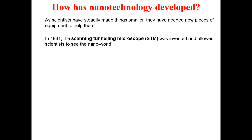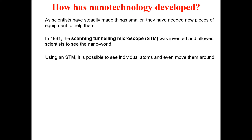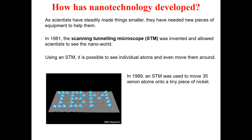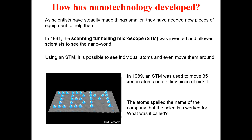With the scanning tunneling microscope, scientists were able to interact with the nano world. Using an STM it was possible to see individual atoms and also to manipulate them — to move them around. One of the most remarkable things done with the STM occurred in 1989, when an STM was used to move 35 xenon atoms onto a tiny piece of nickel.